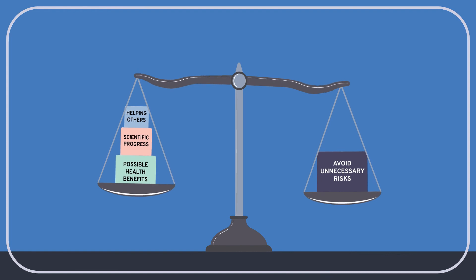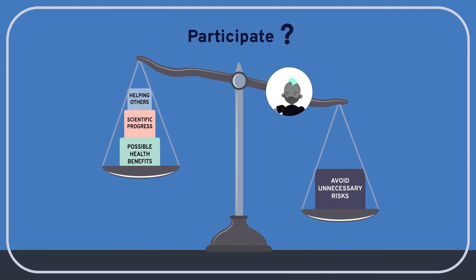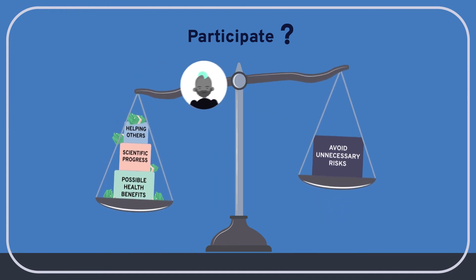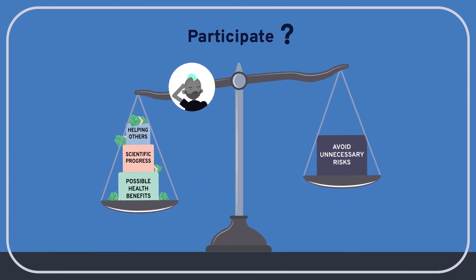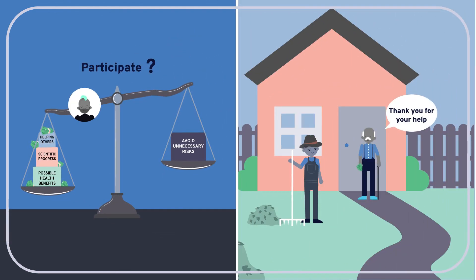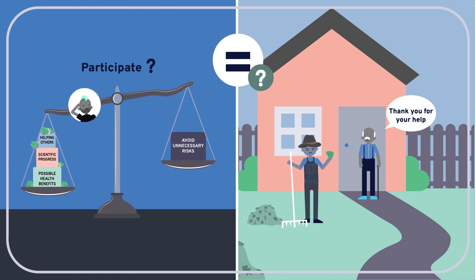And, of course, a person might fully and clearly recognize the risks of a study, fully and clearly recognize the way a monetary incentive is influencing their decision, and yet still autonomously and meaningfully choose to take part in the research because of the payment. Who are we, really, to say that this person's decision has been unduly influenced?